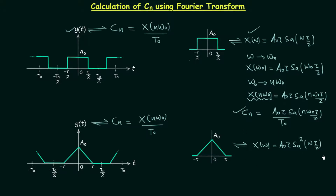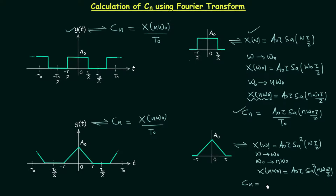We do the same thing in this case also. We replace ω by ω0 and then replace ω0 by nω0. This gives us X(nω0) equal to A0·τ·sinc²(nω0·τ/2). Then to calculate Cn we divide X(nω0) by T0, giving A0·τ·sinc²(nω0·τ/2) divided by T0. This is how we calculate Cn when we have the triangular pulse train.